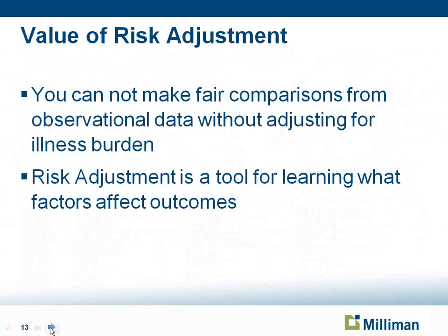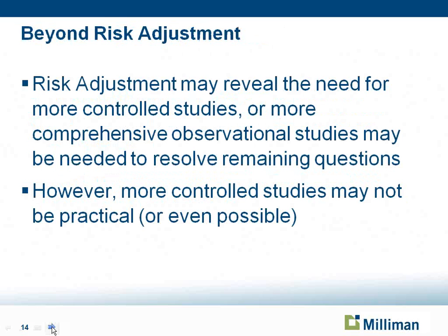The three risk adjusters we just looked at provide information on three different types. The first, the DCG model, used diagnosis data, age, and gender. The second used diagnosis data and procedure code data, information about the type of provider seen, including some pharmacy data. The final model, the Rx adjuster, used only pharmacy claims. As you're looking at risk adjusters, think about the data you have available. The value of risk adjustment is that you really cannot make fair comparisons unless you adjust for illness burden — it's a great tool for learning the factors that influence risk, influence cost, and that will affect patient outcomes.